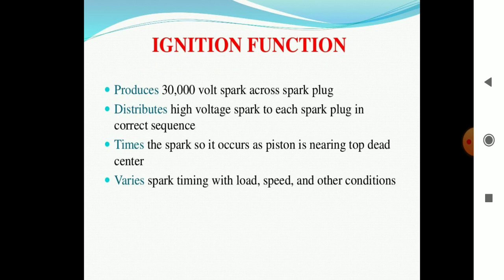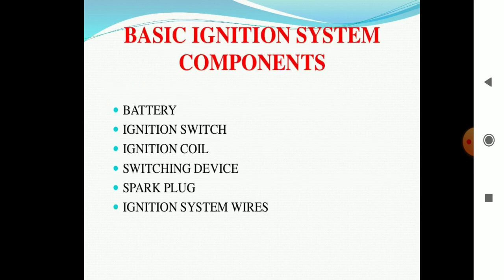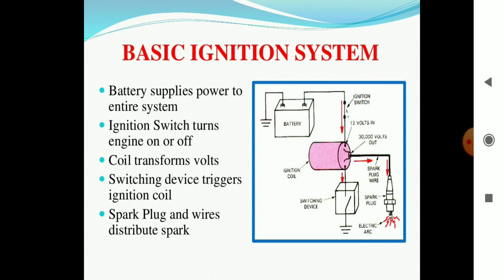What are the basic ignition system components? Battery, ignition switch, ignition coil, switching device, and spark plug with ignition system wirings. The battery supplies power to the entire system. In the line diagram you can see the battery provides power to the entire system.